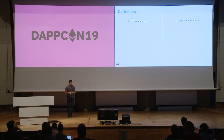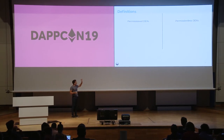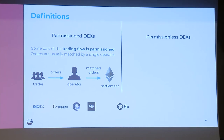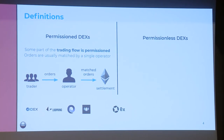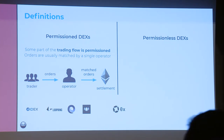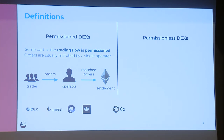Let's start with definitions. You can classify DEXs into two categories: permissioned and permissionless. Permissioned ones have some part of the trading flow that is permissioned — usually by an operator sitting in between and matching orders. Traders sign their orders, hand them to the operator, the operator matches them in real time, sends the matched orders to Ethereum, and settlement happens in a non-custodial way. IDEX, the market leader, implements this, as do many 0x relayers. Loopring is also working on doing this in a very scalable way.